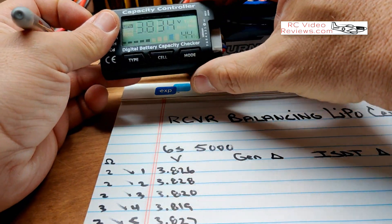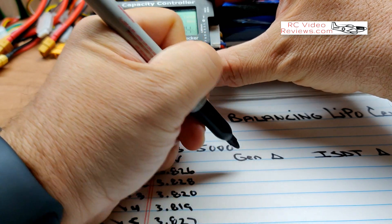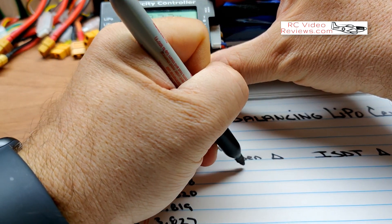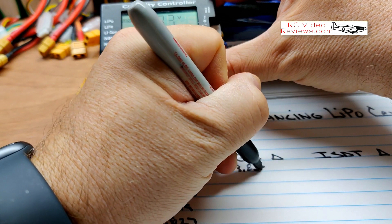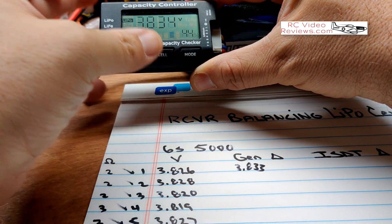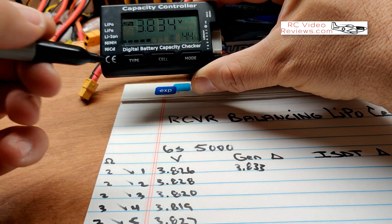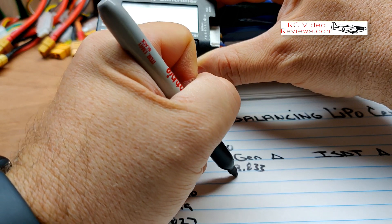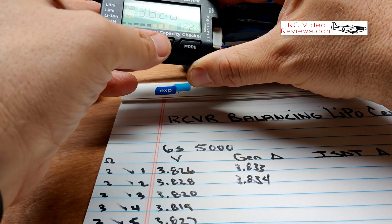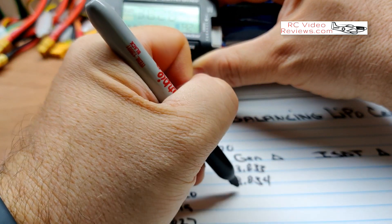3.83 for cell number one. I have to move this just a little bit. So 3.83, it's actually 3.833. Sorry about the writing, I'm kind of working around the camera here. Cell number two is 3.834.